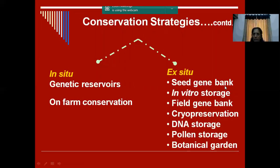What are the methods in ex-situ conservation? Seed gene bank - where you bring the seed and store it. In vitro storage - where we bring the leaf, seed, rhizome, etc., stored in vitro. Field gene bank - vegetative material that can be grown in the field gene bank. Cryopreservation - for the recalcitrant species. DNA storage, pollen storage, and botanical garden. These are all called ex-situ conservation.